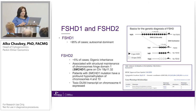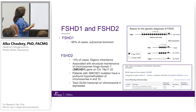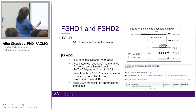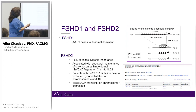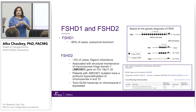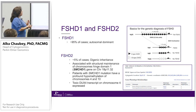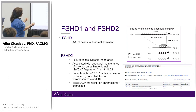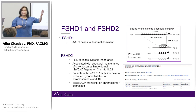The genetic basis of FSHD is also pretty complex. What you see here are these 3.3 kb repeat arrays — macro-satellite markers. In the normal situation, you have 11 to 100 repeats or larger. In that situation, there are no symptoms of FSHD. However, if there's a repeat contraction to less than 10, then you will have FSHD expression. The catch is that towards the end there is a 10 kb polymorphic region that determines the 4QA or 4QB type.